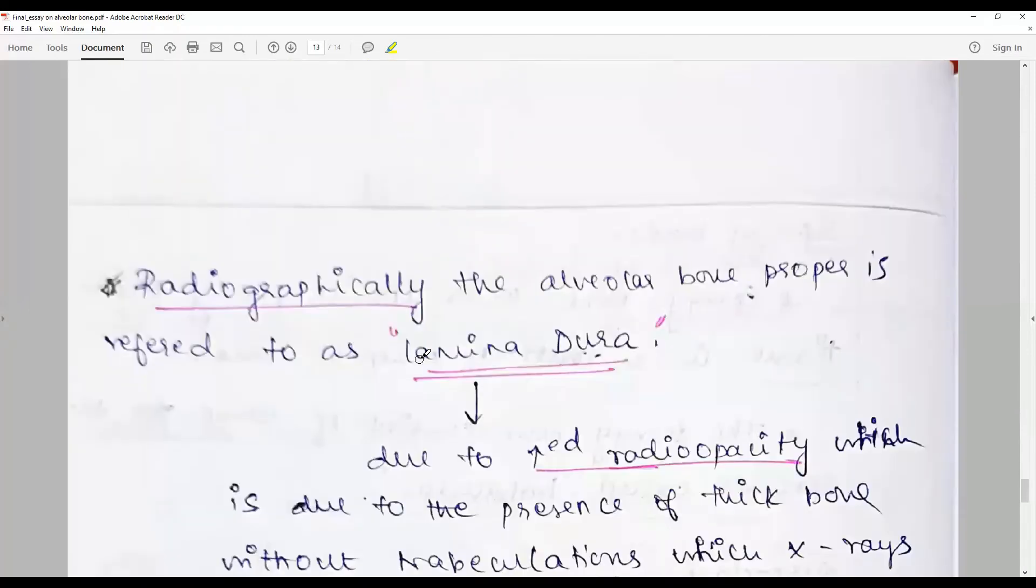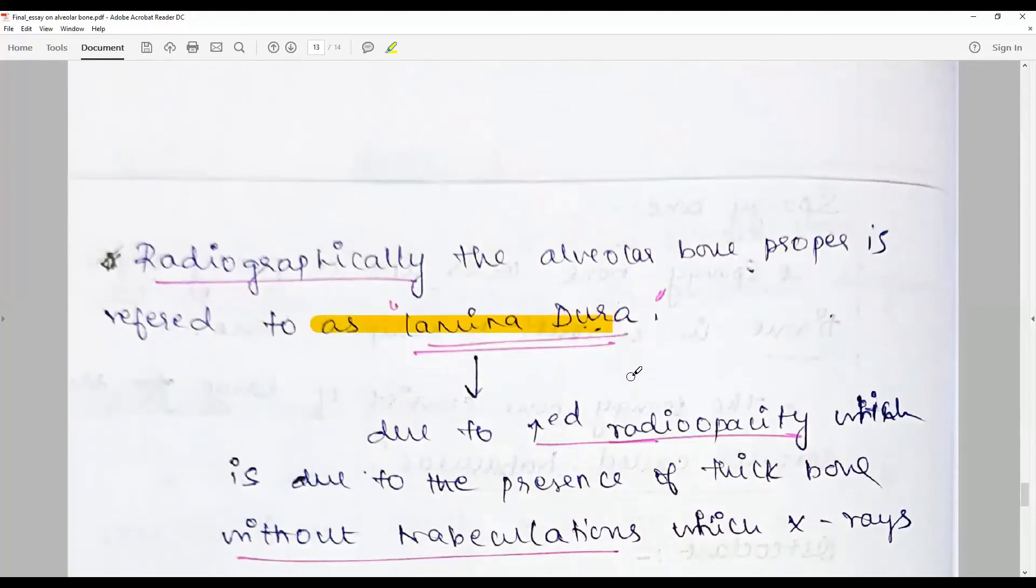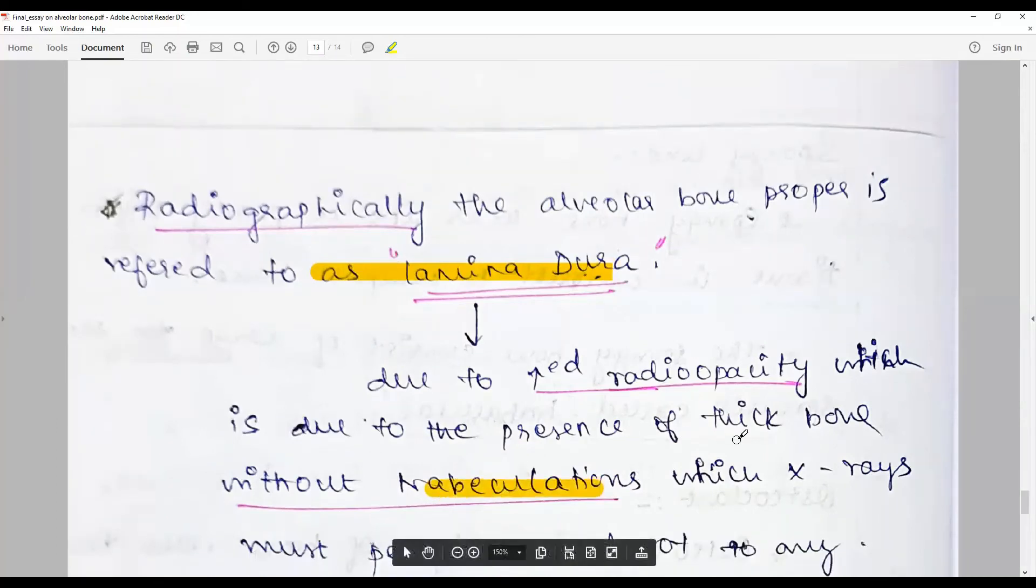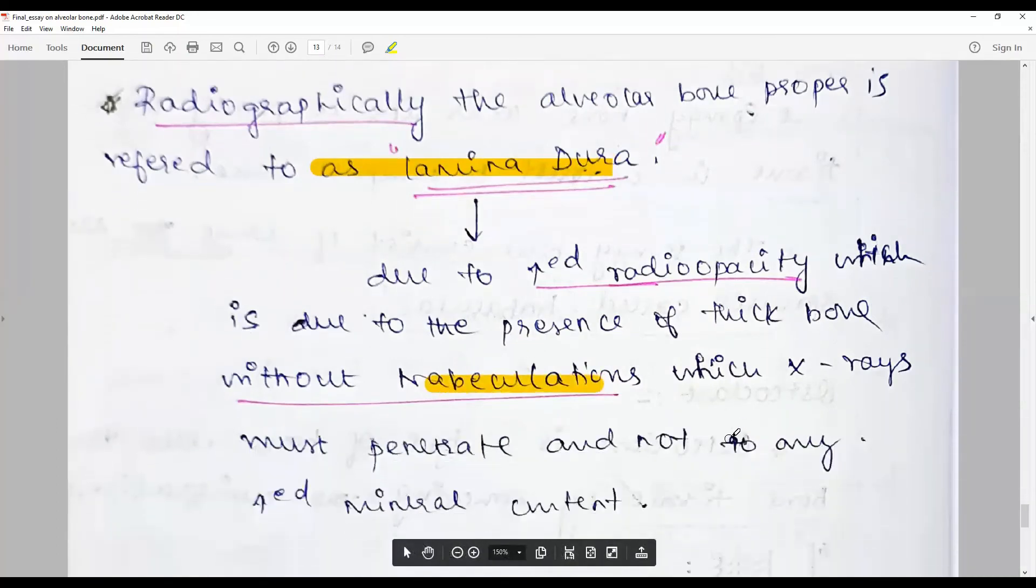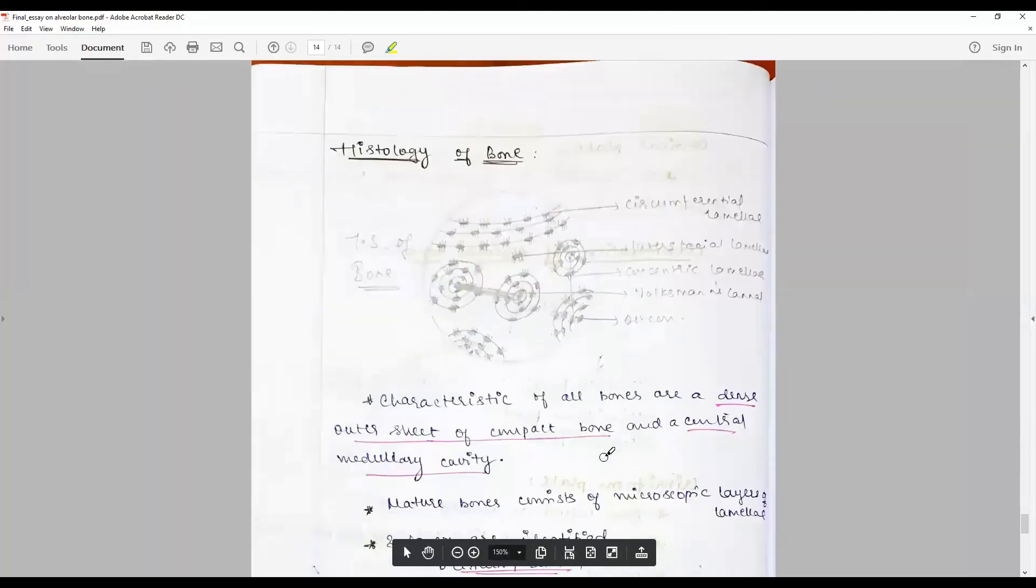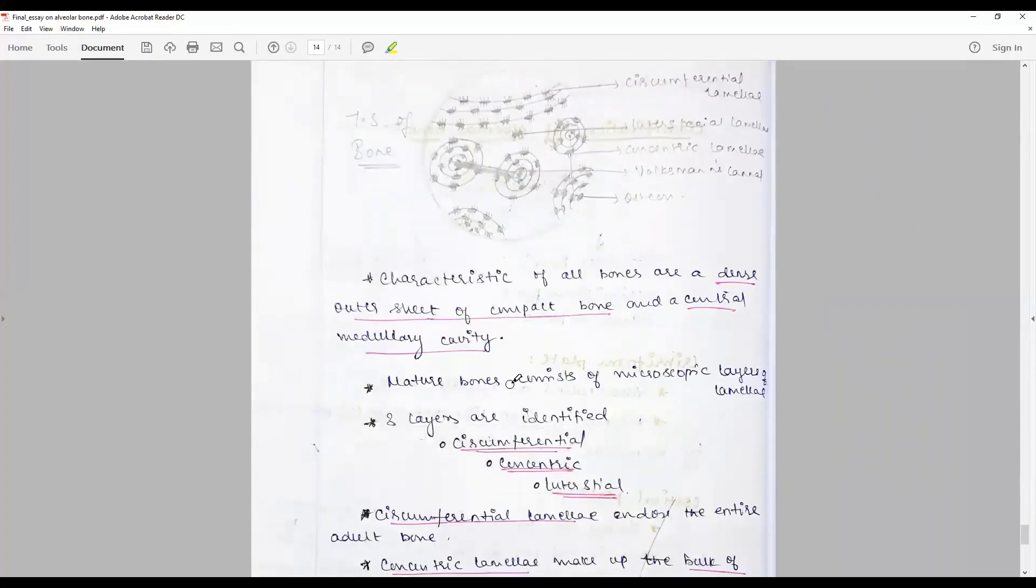Briefly about the morphology: radiographically, the alveolar bone proper is referred to as lamina dura. This is due to the increased radiopacity due to the presence of thick bone without trabeculation in which x-rays must penetrate, and because of increased mineral content it appears to be a white line.